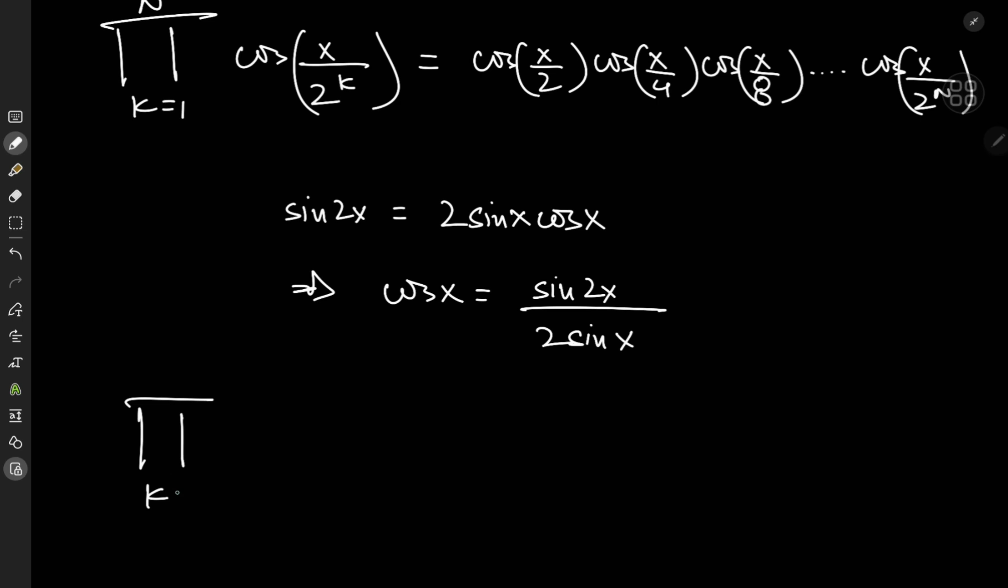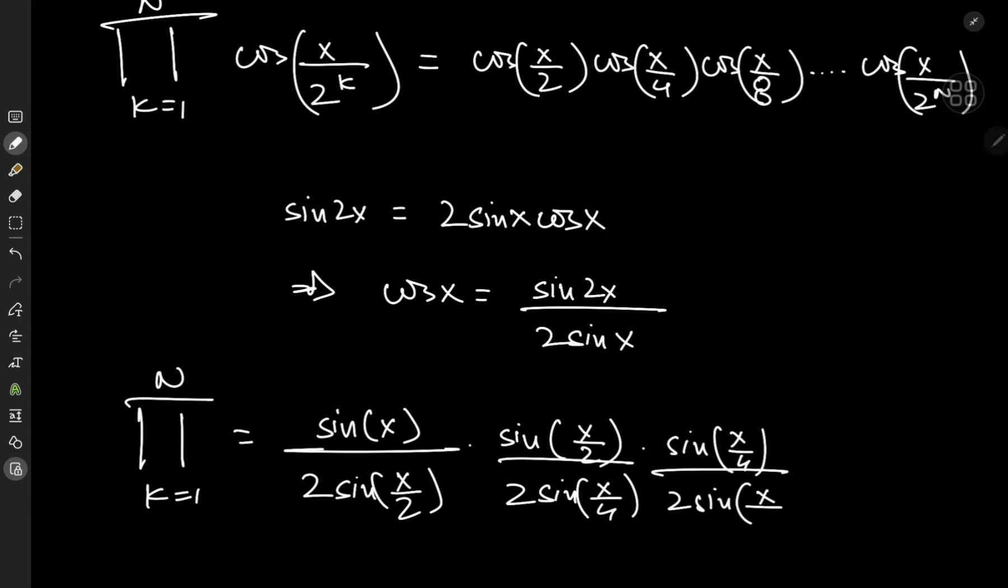So let me return to my product from k equals 1 to n. This would be equal to the cosine of x by 2 turns into the sine of 2 times x by 2, which is just x, divided by twice the sine of x by 2, and we're multiplying this by the sine of x by 2 divided by twice the sine of x by 4 times the sine of x by 4 divided by twice the sine of x by 8, and this pattern continues till we get to sine of x by 2 to the n minus 1 divided by 2 times sine x by 2 to the n.